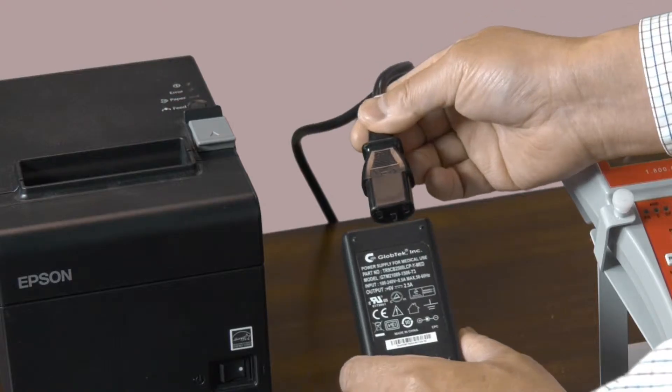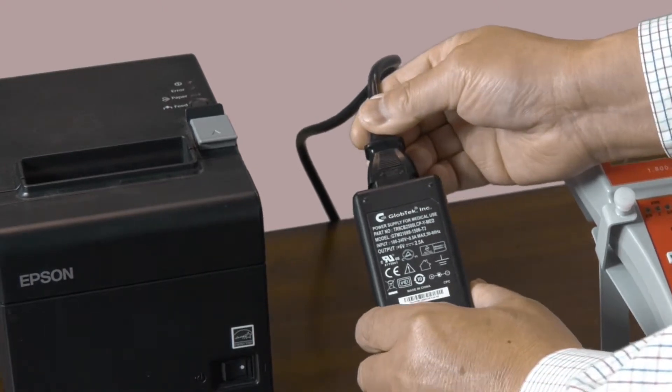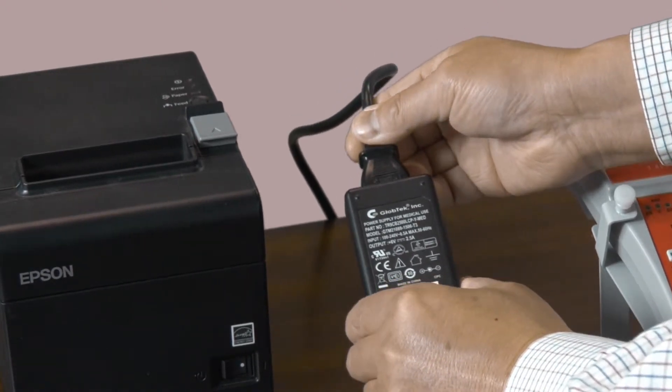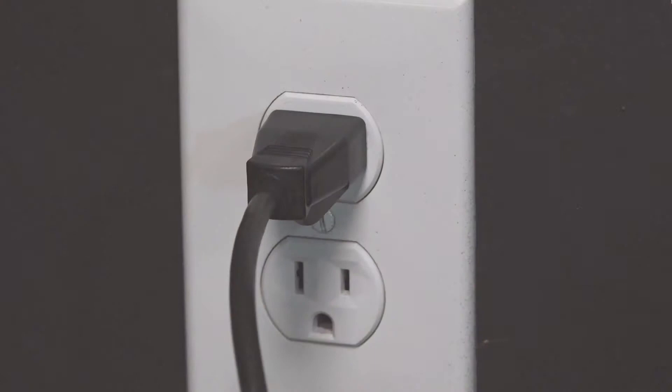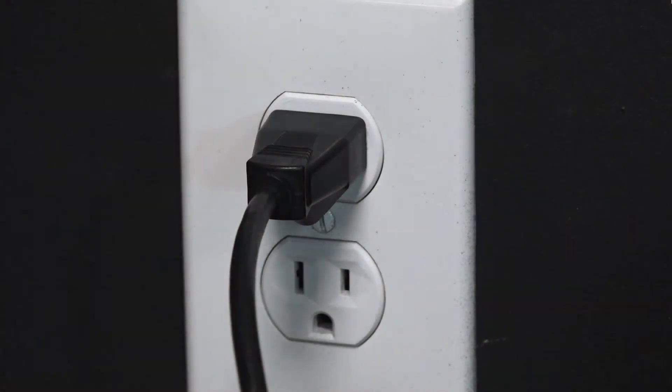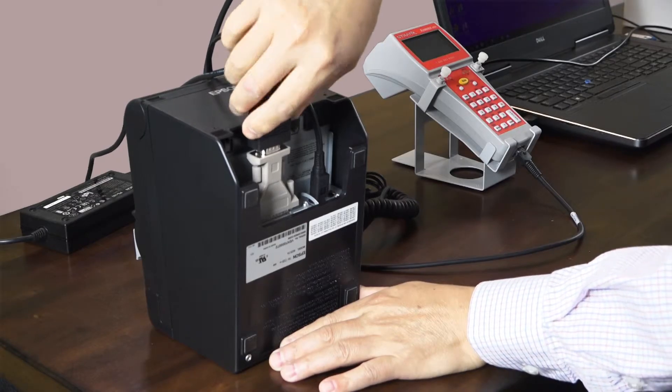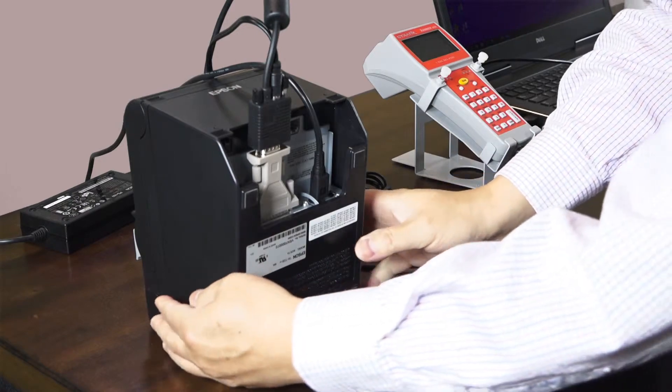Then take the secondary power cable and plug it into the black box of the AC power cable. Next, plug the power cable into your wall outlet. In order to complete the connection, you'll need to plug the verifier communications cable into the printer.